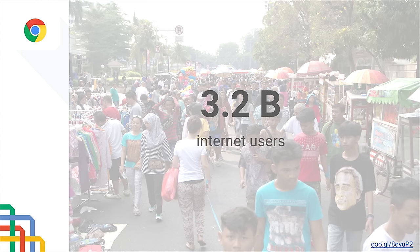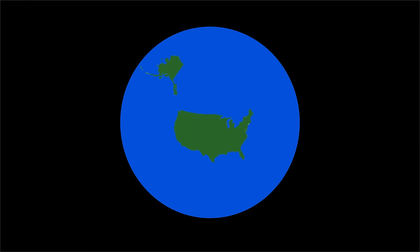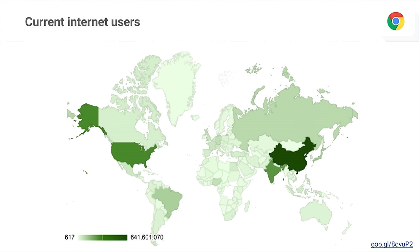So as we probably know, the world is a pretty big place. Looking at statistics from the end of 2014, we have about 3.2 billion internet users around the world. But when we're actually developing and building our experiences, some of us might have a picture of the world that looks a little bit more like this — maybe just the US, and if we're really expanding our thinking, we might throw Europe into the mix too.